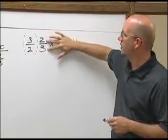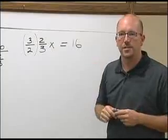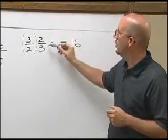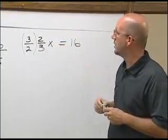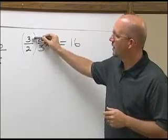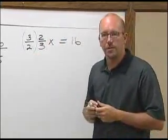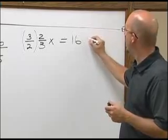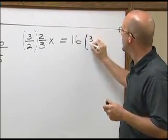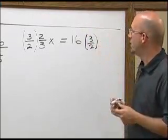So to undo the multiplying by two-thirds, we will multiply by 3 over 2. Rule two, do the same thing to both sides. So I need to also multiply this side by 3 over 2.